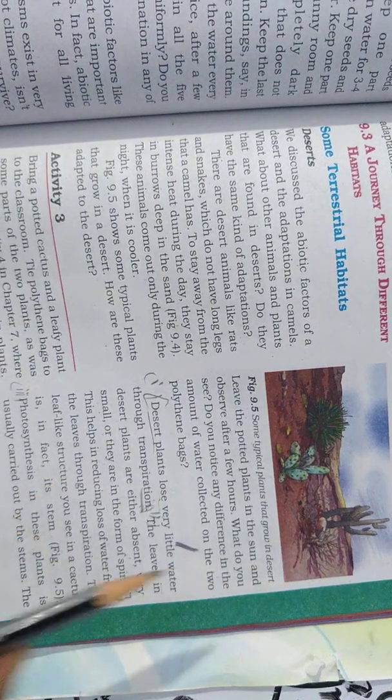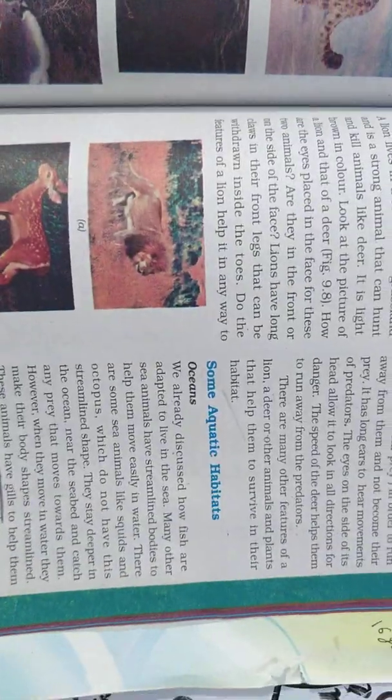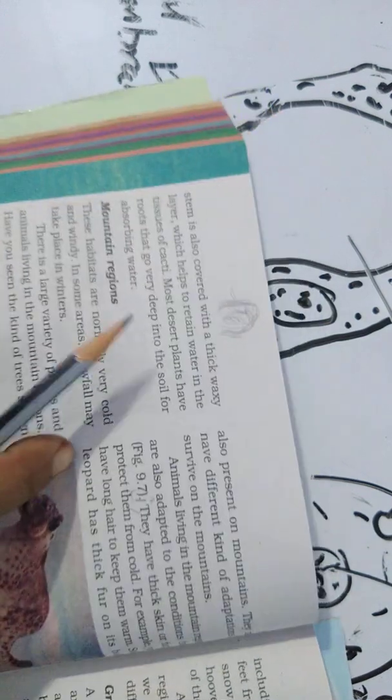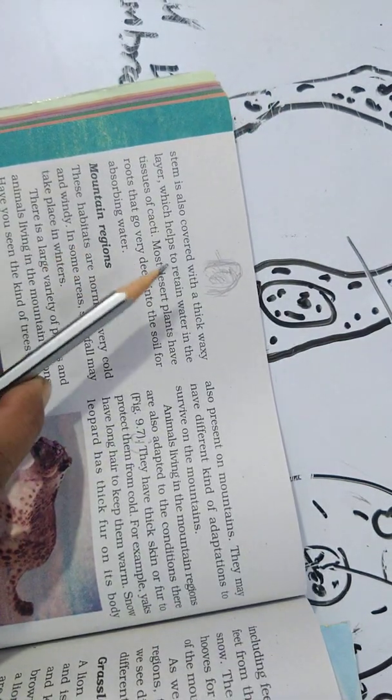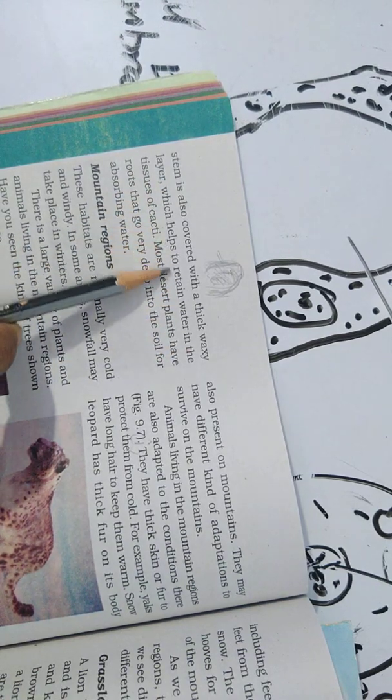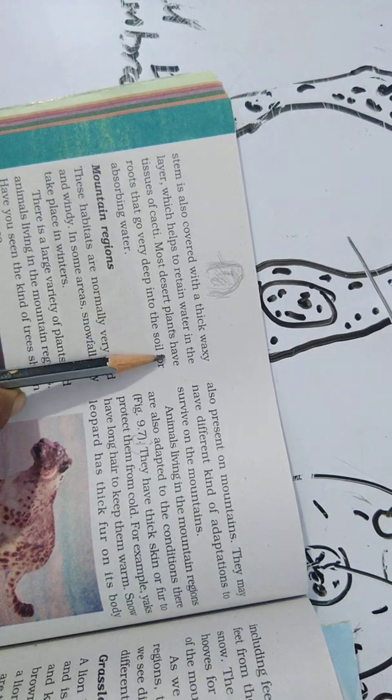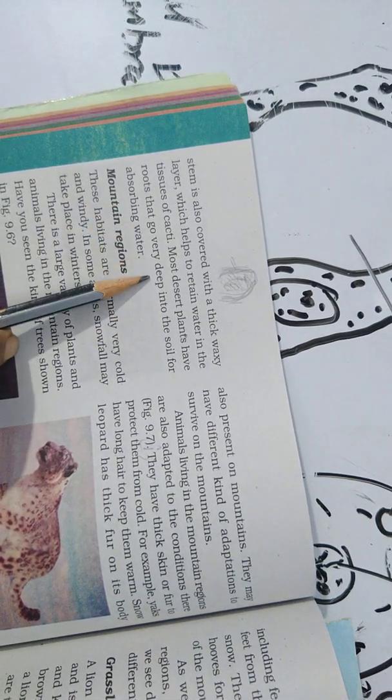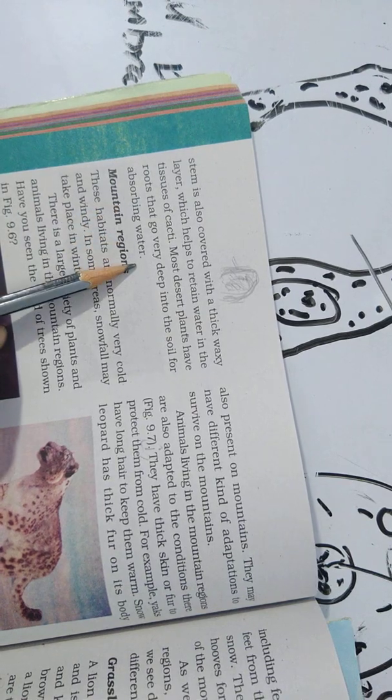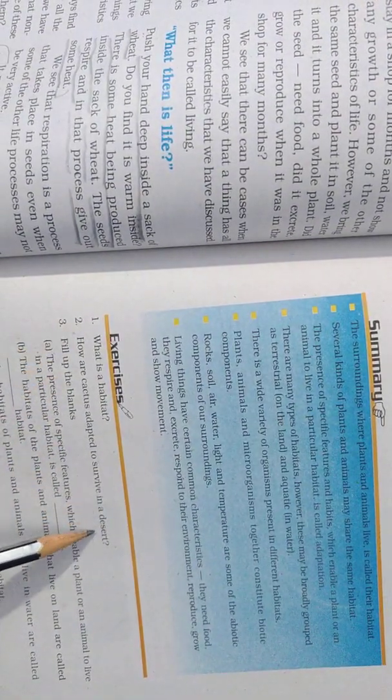The leaf like structure we see in the cactus is actually its stem. This also helps to reduce water loss. Photosynthesis is carried out by that structure. The stem is also covered with a thick waxy layer which helps to retain water. And most of the desert plants have roots that go very deep into the soil for absorbing water. So these are the characteristics which help the cactus to live in desert.